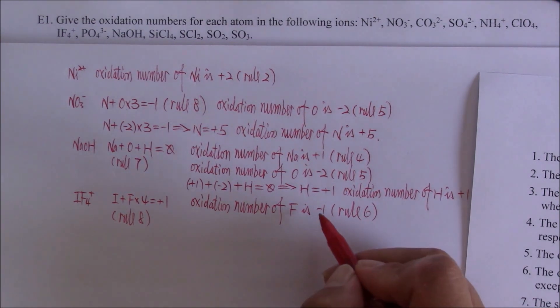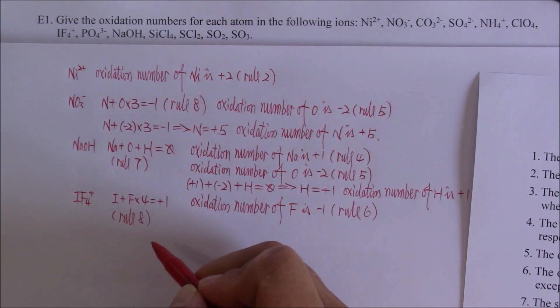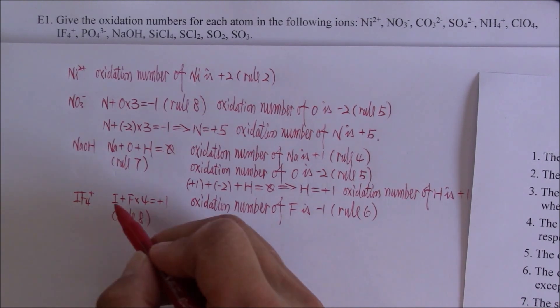Therefore, we will plug negative 1 into this equation. Then we can calculate the oxidation number of iodine.